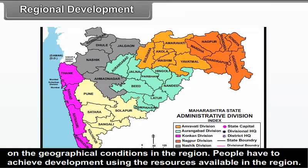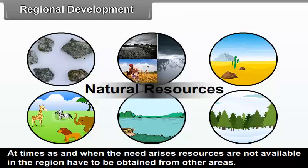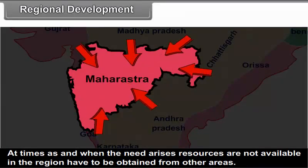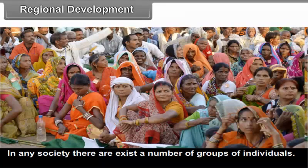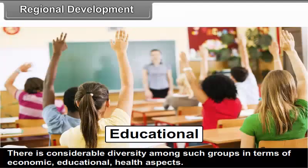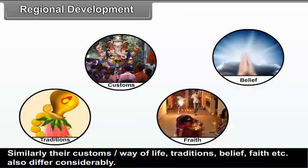People must achieve development using resources available in the region. When needed, resources not available locally have to be obtained from other areas. In any society, there exist a number of groups of individuals with considerable diversity in terms of economic, educational, and health aspects. Similarly, their customs, way of life, traditions, beliefs, and faith also differ considerably. All these affect the willingness and ability of people in utilizing resources.